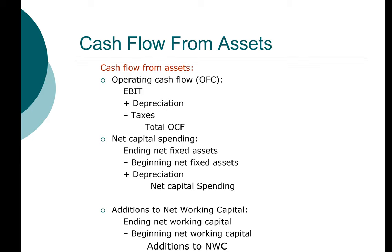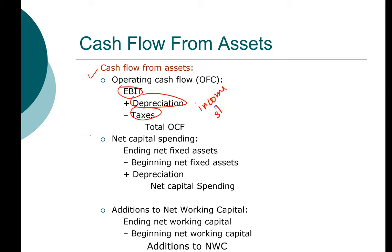In this example, we're going to compute cash flow from assets using the equation based on operating cash flow, net capital spending, and net working capital. To compute operating cash flow, we'll need EBIT, depreciation, and taxes. All this information is located in the income statement, so let's go and take a look at the income statement and extract that information.